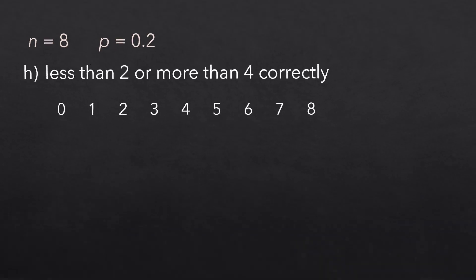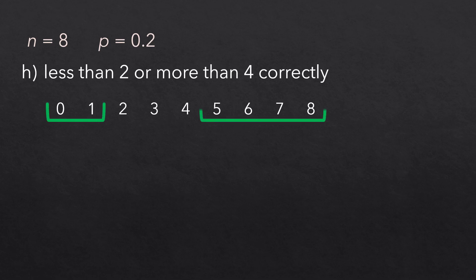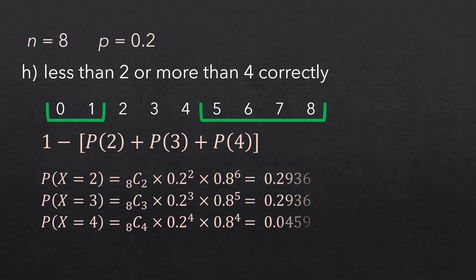For part h, we want less than 2 or more than 4 successes. The word OR here means any value covered is included. Now, using formula, if we decide to calculate the probability for every point, we have to do that for 6 different points. But we can use the complement rule instead. We can calculate the probabilities for 2, 3, and 4, then subtract from 1. Using formula, the sum of these 3 is 0.4863, and subtracting from 1 gives the required answer.